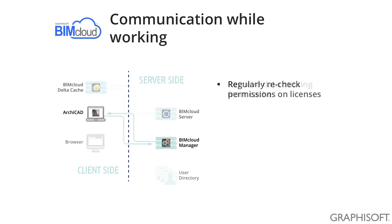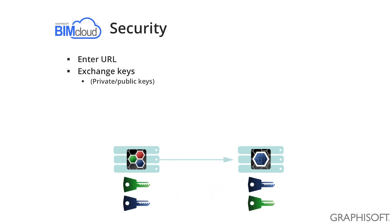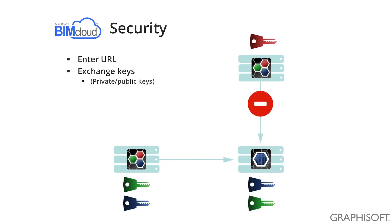While working, every now and then ARCHICAD will go back to the BIMcloud Manager to see if the permissions have changed on the server, if the username and password are still correct, and to see if the project is still located on the same BIMcloud Server. Since these BIMcloud Servers can be dispersed worldwide, we must ensure that no one else can access these components. The BIMcloud Manager and the BIMcloud Server exchange secure keys during the setup and the pairing process. This ensures that the BIMcloud Server will not accept any outside communication from other BIMcloud Managers — even if the exact URL of the server is known by an intruder, it is not possible to hijack the BIMcloud Server containing your sensitive projects.